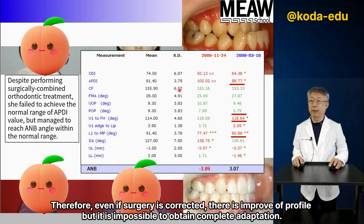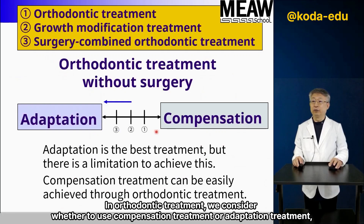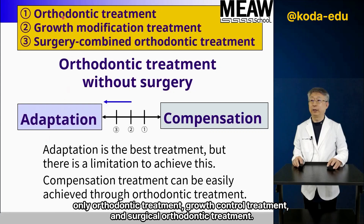Therefore, even if surgery is performed and the profile improves, it is impossible to obtain complete adaptation. In orthodontic treatment, we consider whether to use compensation treatment or adaptation treatment — whether that involves only orthodontic treatment, growth control treatment, or surgical orthodontic treatment.